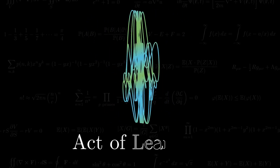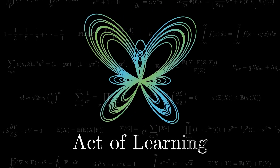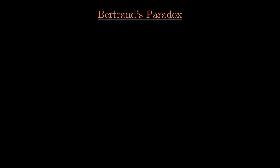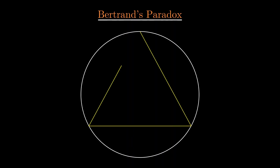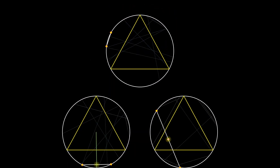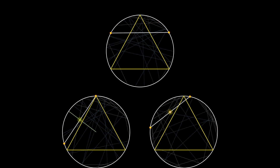Hello everyone, welcome back to Act of Learning. Bertrand's Paradox, a famous problem in probability posed by Joseph Bertrand, asked for the probability that the length of a random chord chosen on a unit circle is greater than the side of an inscribed equilateral triangle.